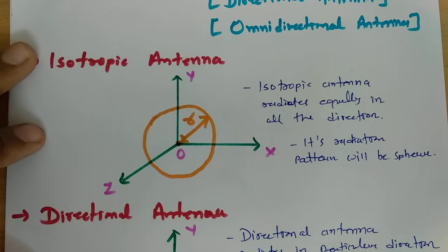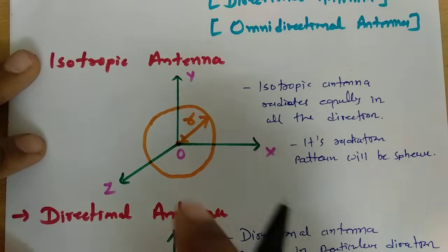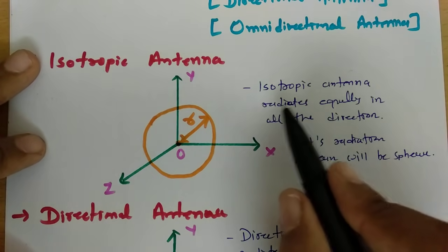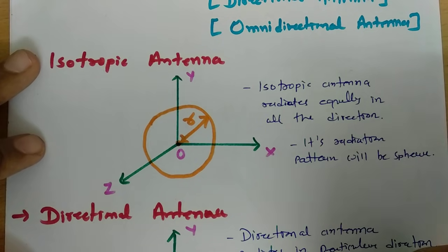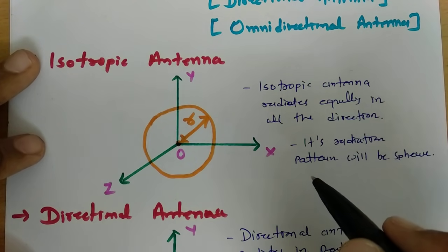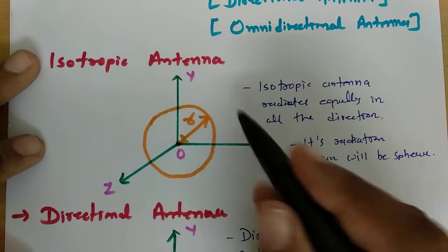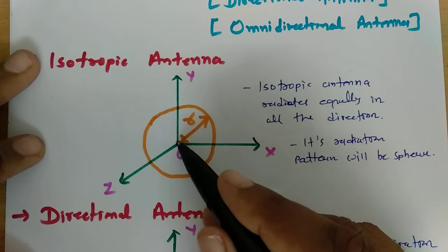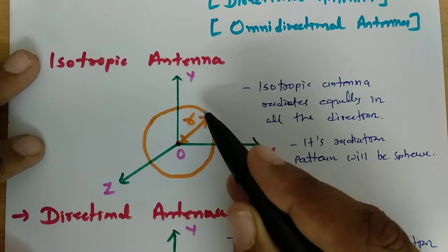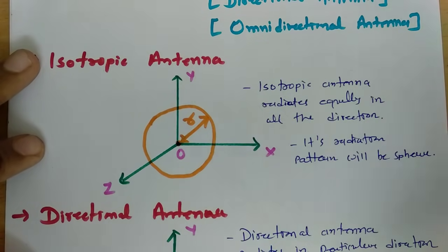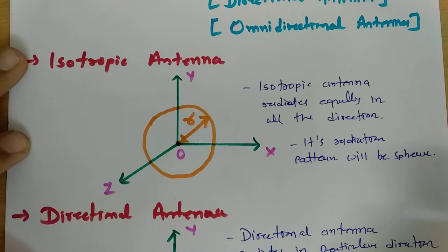Let us have a quick review. First is isotropic antenna: it radiates equally in all directions, so its radiation pattern is a sphere. If I consider my isotropic source at the origin, then at distance R, it radiates equally in all directions.